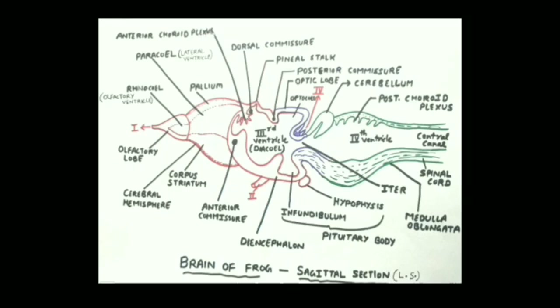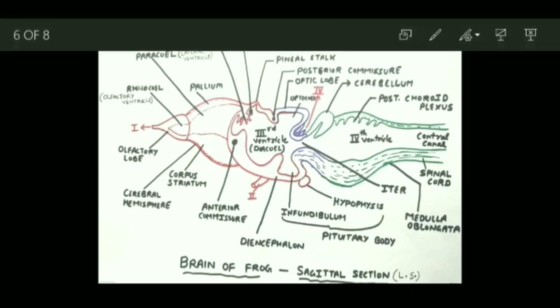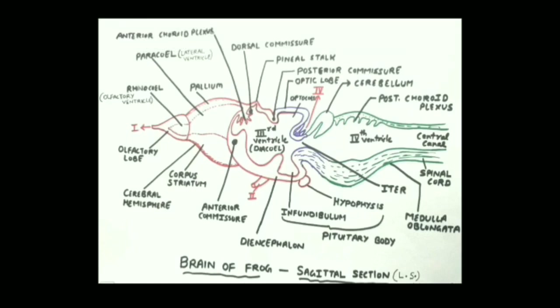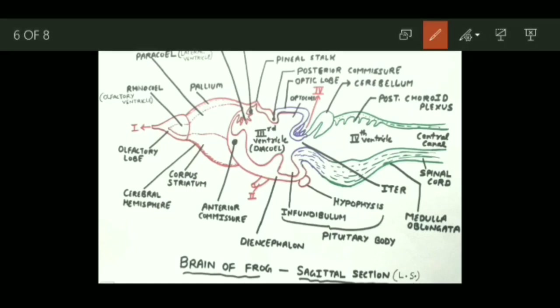Now let's look at the sectional view of the brain. The first part is the olfactory lobes — these are one pair in number and they enclose a cavity called the rhinocoel or olfactory ventricle. The olfactory lobes are concerned with the sense of smell, and since they are concerned with the sense of smell, they are very important in the feeding behavior of the frog.